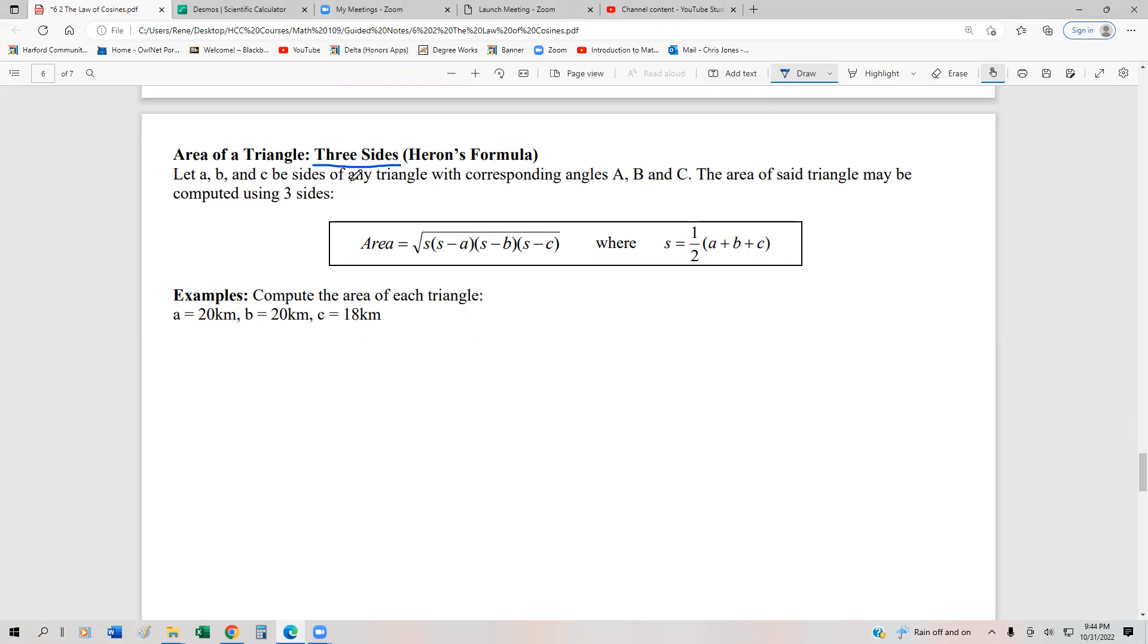So if A, B, and C are sides of any triangle with corresponding angles A, B, and C capital, the area of the triangle can be computed by the square root of S times S minus A times S minus B times S minus C, where S is half of the perimeter.